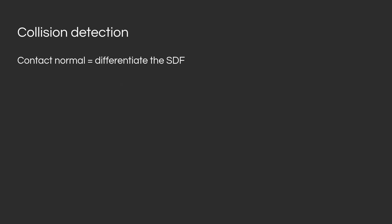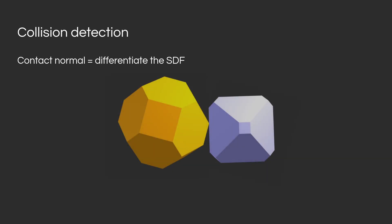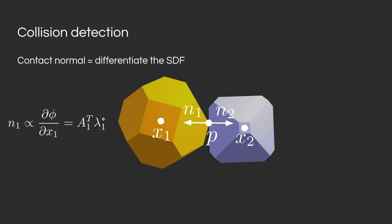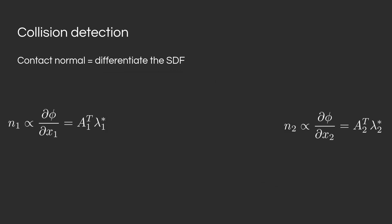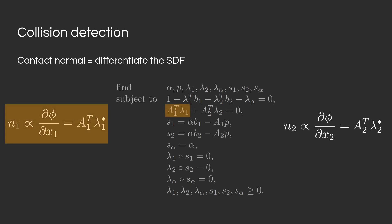The contact normal can be obtained by differentiating the signed distance function. Say we have two shapes in contact: shape 1 is located at position x1 and shape 2 at position x2. The contact point P is located at their interface, and we have n1 and n2, the contact normals for both shapes. n1 is proportional to the gradient of phi with respect to x1, and has a nice closed-form solution in terms of the dual variables lambda 1. The same is true for n2, and computing those contact normals is extremely simple because these quantities have been computed when solving the KKT conditions.